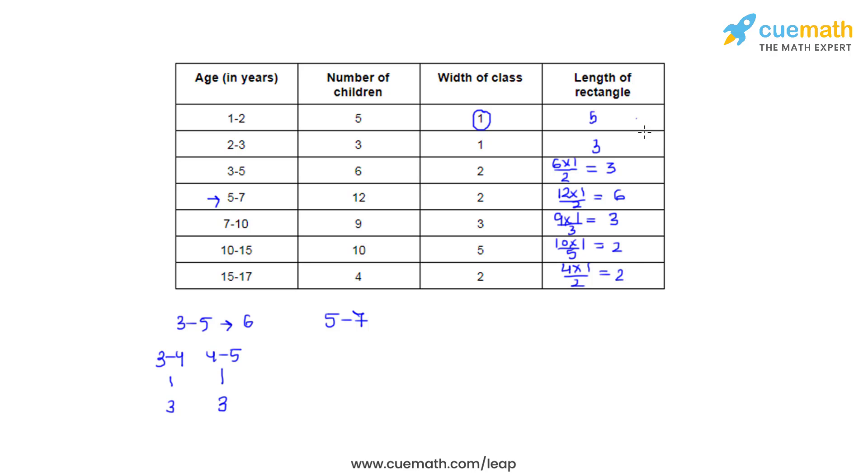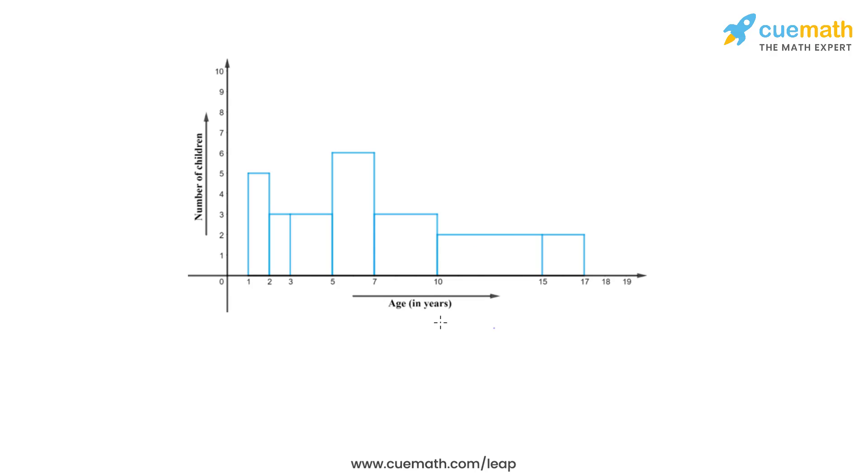So with these new frequencies we will construct a histogram and we will get a graph, and then we can understand the whole data that was given to us. So let's draw the histogram. So this is how the histogram looks. We have taken the age of children in years on the x-axis and the number of children on the y-axis, and these are the rectangular bars that we have with the adjusted frequencies, and this is how we solve this problem.